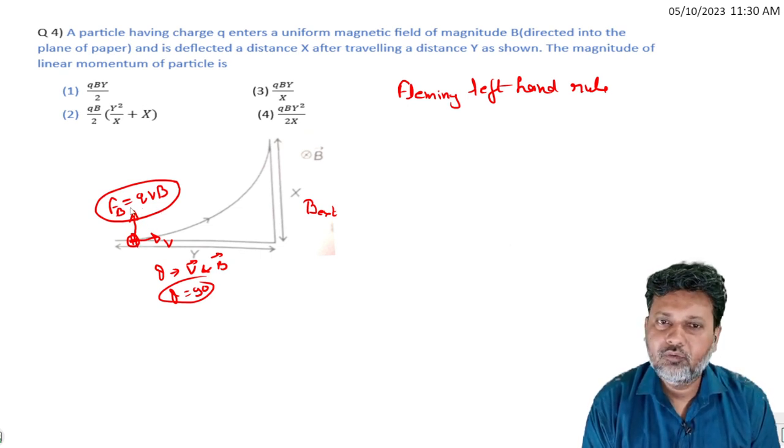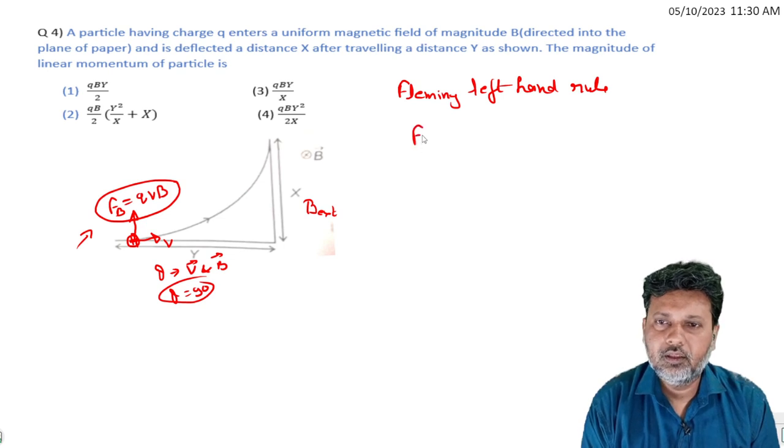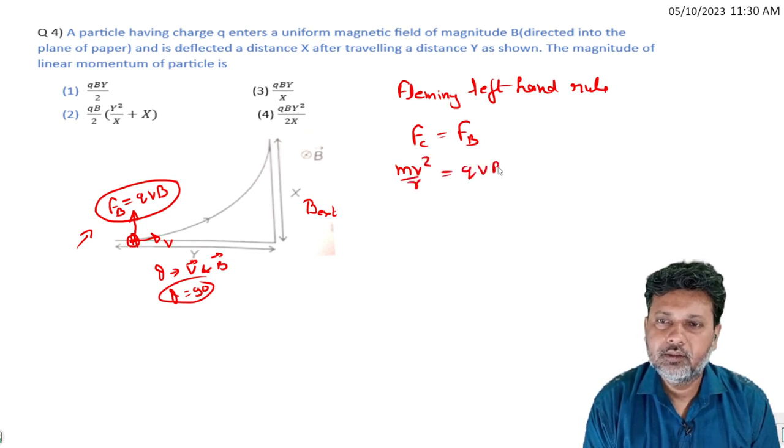The magnetic field provides the centripetal force. So we can write: centripetal force equals mv² by r equals qvB.